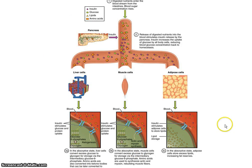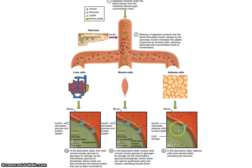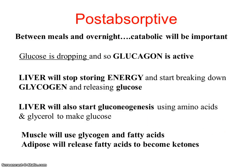A diagram illustrates the absorptive state: digestive nutrients are absorbed, the pancreas senses this and produces insulin, and cells begin taking up glucose. Nutrients are directed to adipose, muscle, and liver — with the liver handling essentially all types. Adipose tissue handles lipids and glucose especially well. Insulin functions as a highly anabolic hormone in this state.